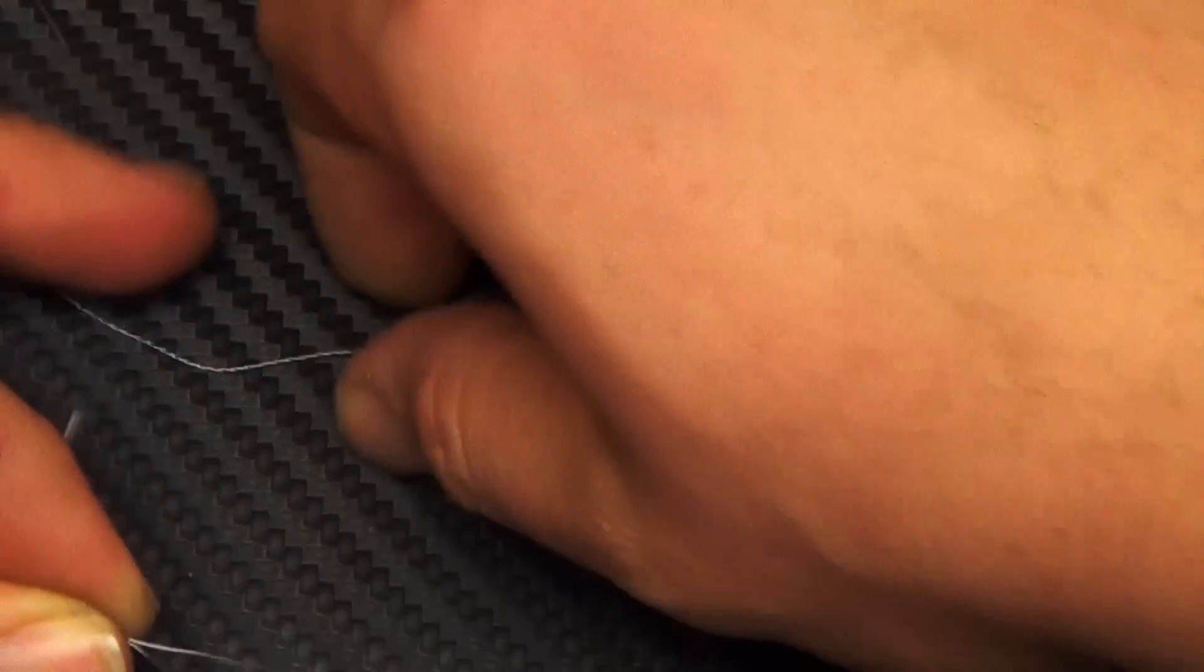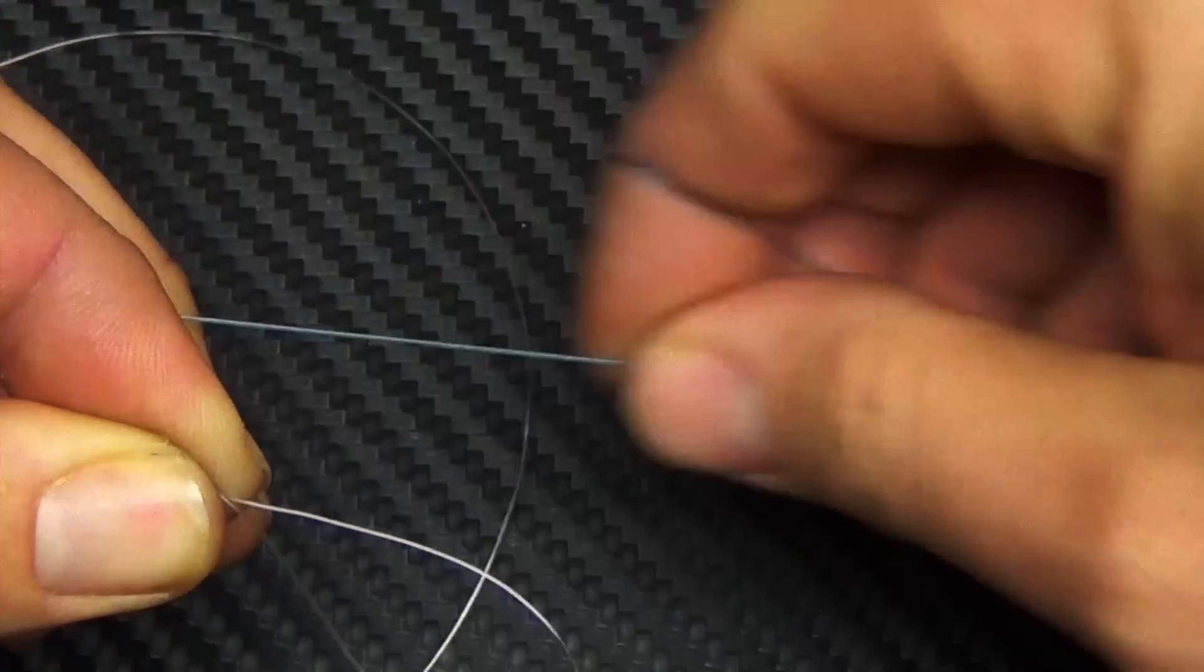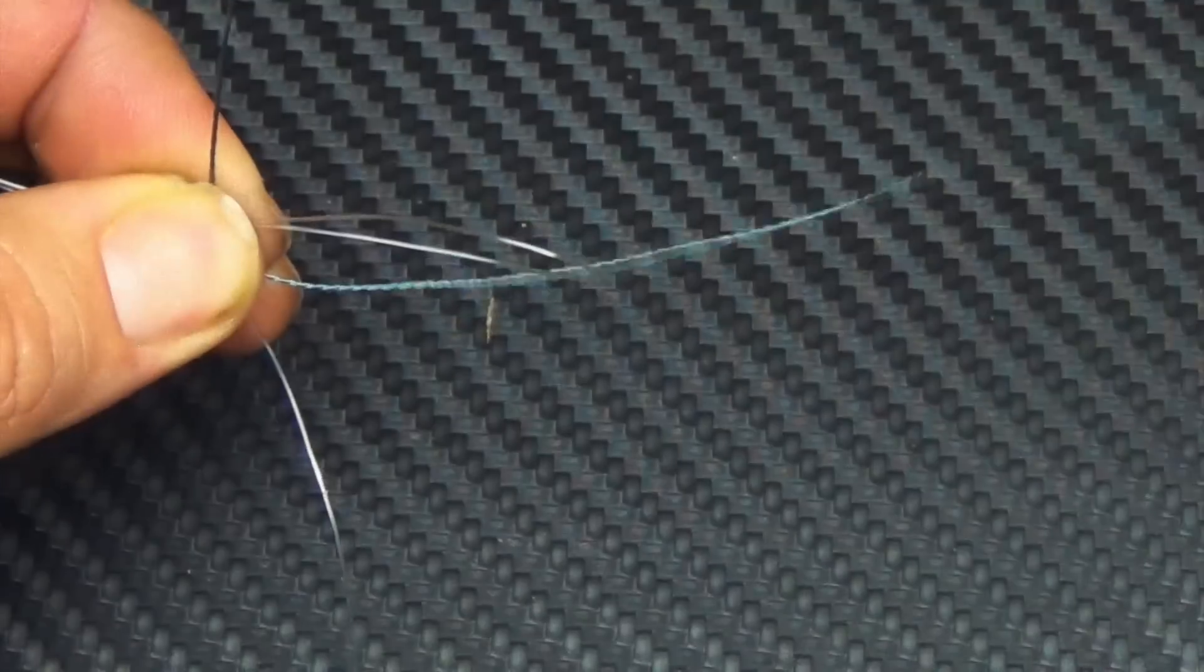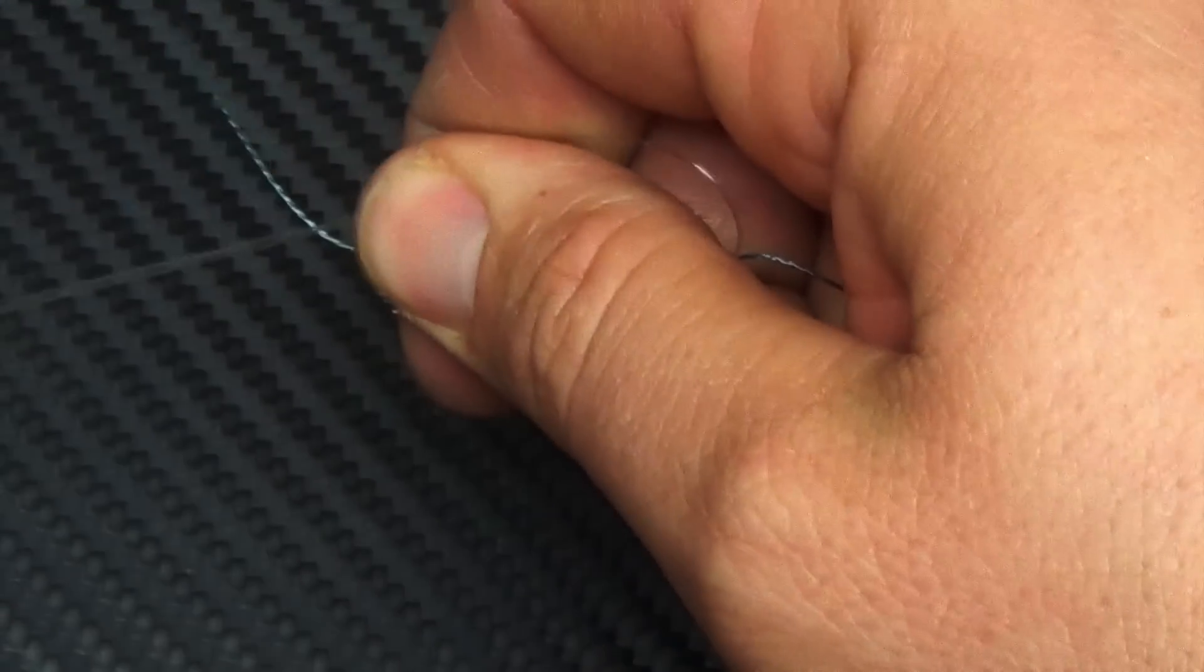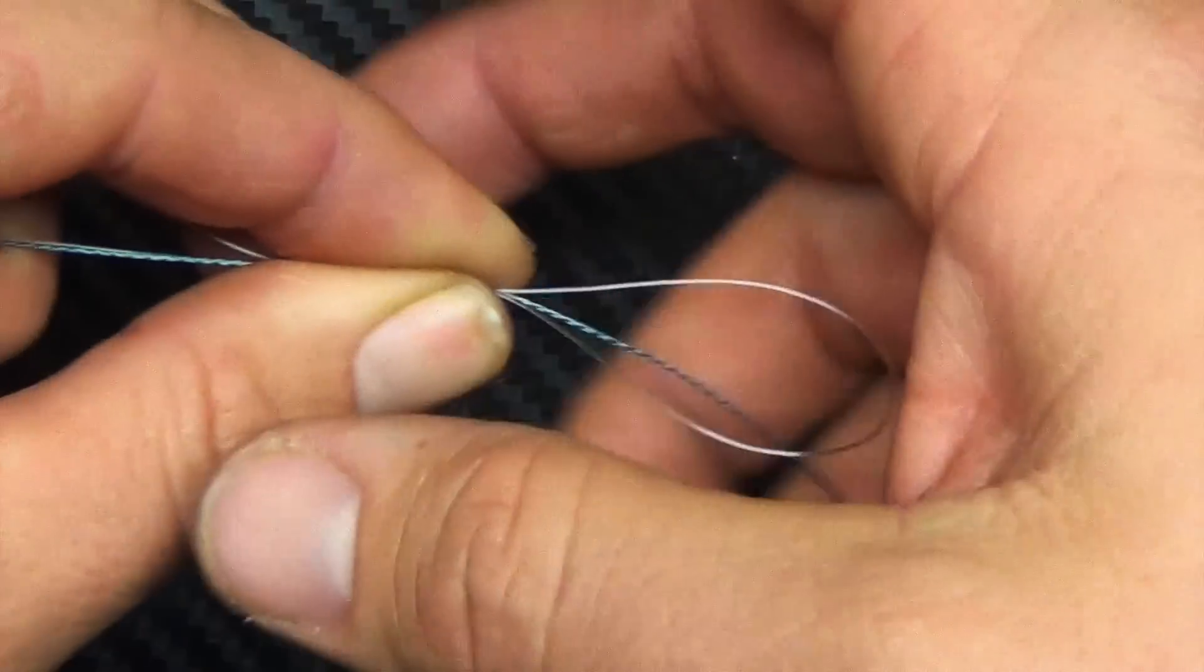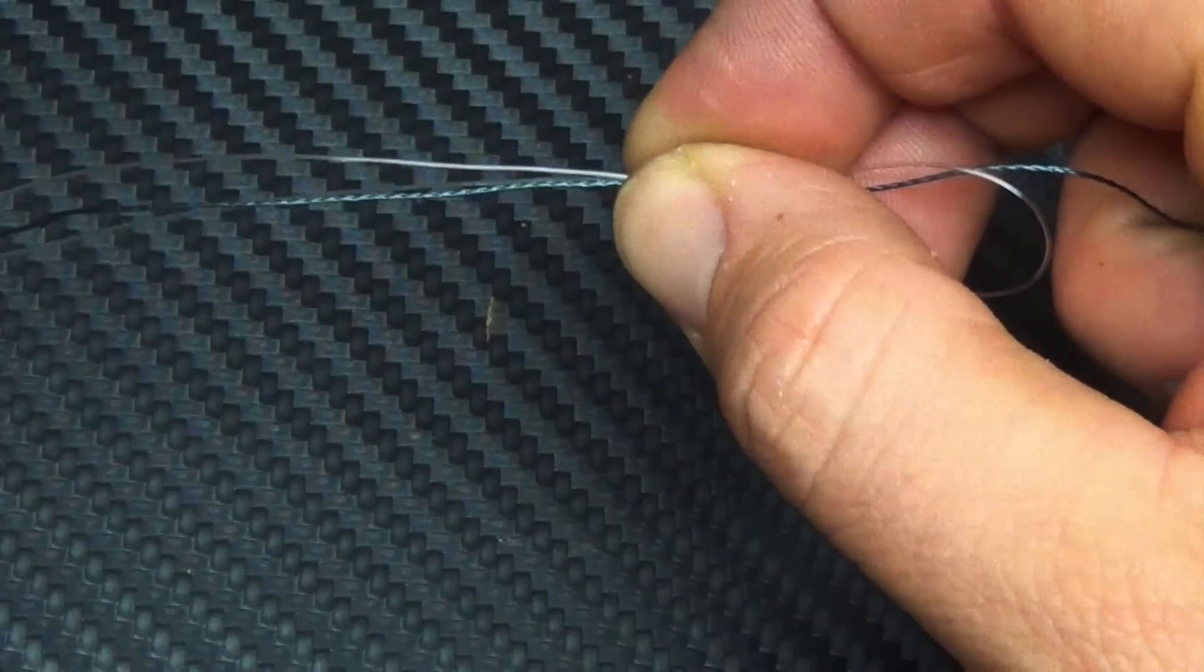Then you're going to take your braid, this will be your mainline, and you're going to bring it up through the loop that you made. Give yourself plenty of line to work with here. Once you got it through your loop, I'm going to take my right hand and pinch everything here.